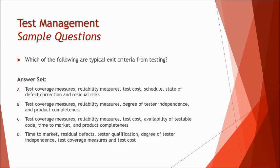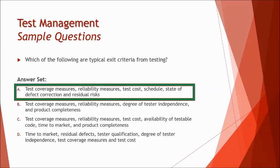Option B includes degree of tester independence, which is an entry criteria — you consider independence when entering the process, not exiting. Option C includes availability of testable code, which is also an entry criteria needed to enter testing at any level. Option D includes tester qualification and degree of tester independence, also entry criteria. So the right answer is A, straightforward if you remember the entry and exit criteria of the test process.